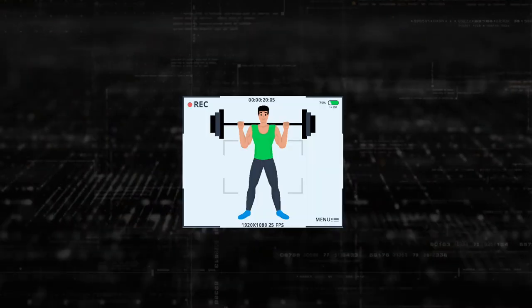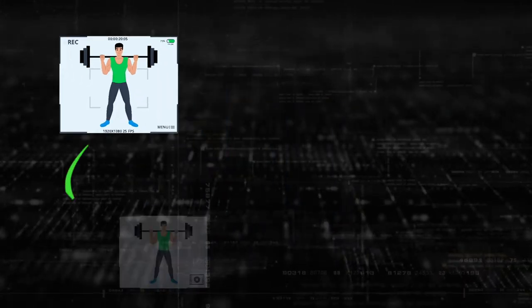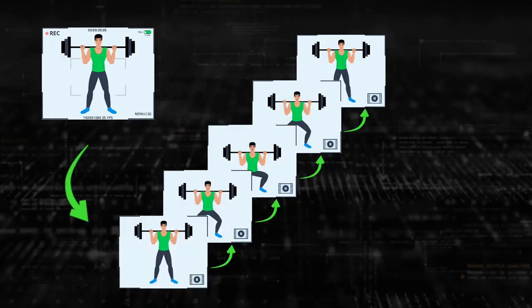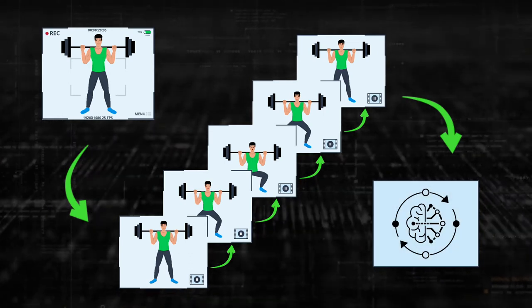The application records the user performing an exercise and sends the video to the cloud. Then the video is split into individual frames, and analyzed to indicate the beginning and the end of the exercise. A trained neural network is then run to extract the position of key points on the human body that will form a virtual skeleton.